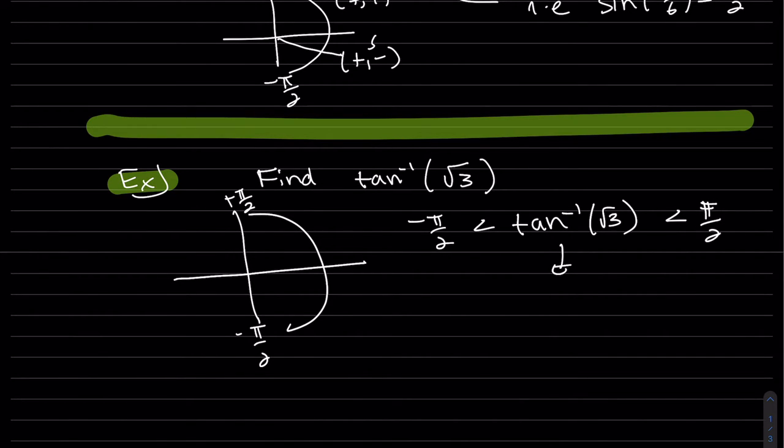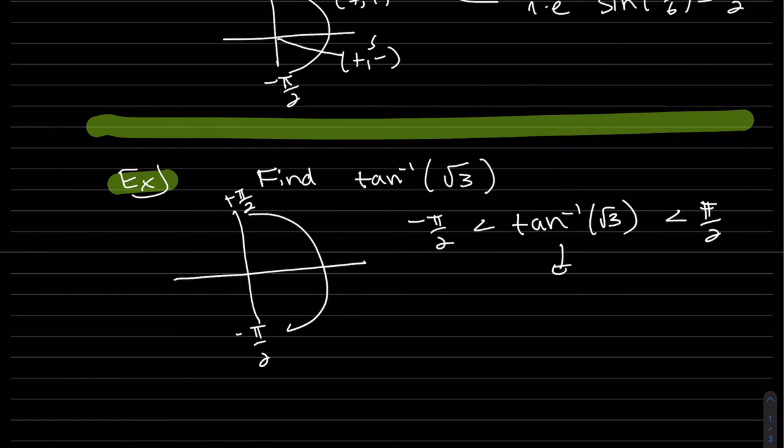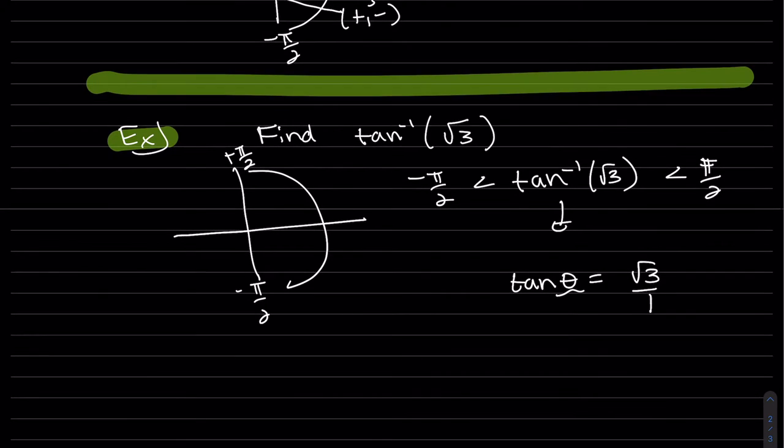Since it's positive in quadrant 1, it's either 30 degrees or 60 degrees, if you remember correctly. And the tangent of theta, what angle is square root of 3 over 1? I do remember, so it's going to be 60 degrees or pi over 3 is our answer.